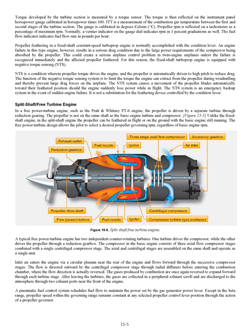Propeller feathering in a fixed shaft constant speed turboprop engine is normally accomplished with the condition lever. An engine failure in this type engine results in a serious drag condition due to the large power requirements of the compressor being absorbed by the propeller. This could create a serious airplane control problem in twin-engine airplanes unless the failure is recognized immediately and the affected propeller feathered. For this reason, the fixed shaft turboprop engine is equipped with negative torque sensing (NTS). NTS is a condition wherein propeller torque drives the engine, and the propeller is automatically driven to high pitch to reduce drag. The NTS system causes the propeller blades to move automatically toward their feathered position should the engine suddenly lose power while in flight. The NTS system is an emergency backup system; it is not a substitution for the feathering device controlled by the condition lever.